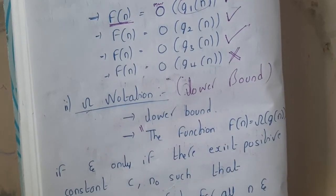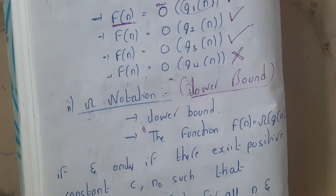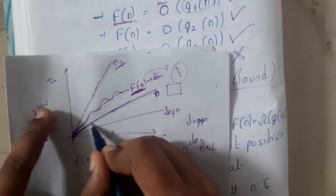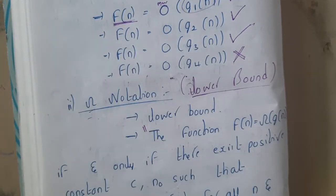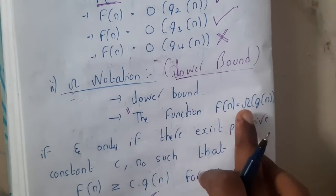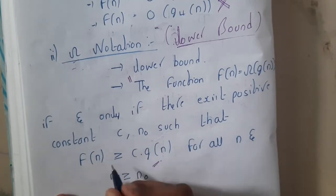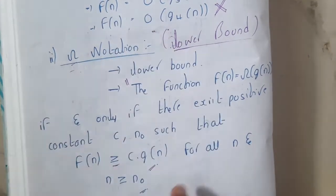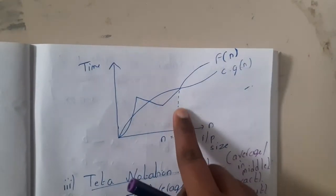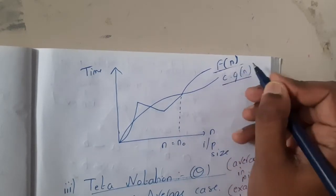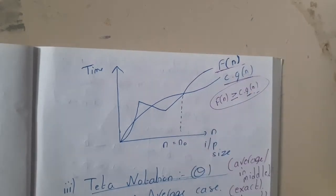Now let's go to Omega notation. Omega is for the lower bound. The equation is: f(n) = Ω(g(n)) if and only if there exists a positive constant c and n₀ such that f(n) ≥ c·g(n) for all n ≥ n₀. After a particular point, c·g(n) is always below and f(n) is always above.